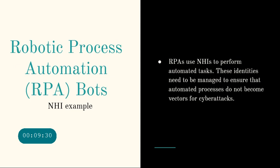Robotic process automation bots are another type of non-human identity. Automation is everything today — if you're not thinking about automation and improving the efficiency of your existing processes, you're missing something. RPA bots use these non-human identities to perform automated tasks and need to be managed carefully to ensure automated processes do not become vectors for cyber attacks. For example, if a bot is breached, a bad actor could write scripts to download malware and automate attacks on other systems.